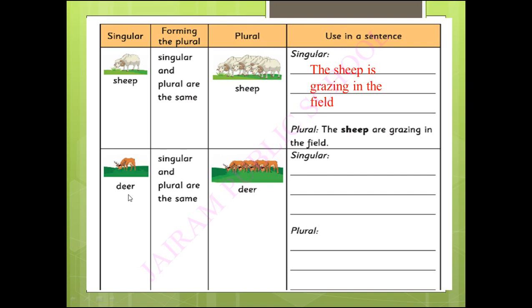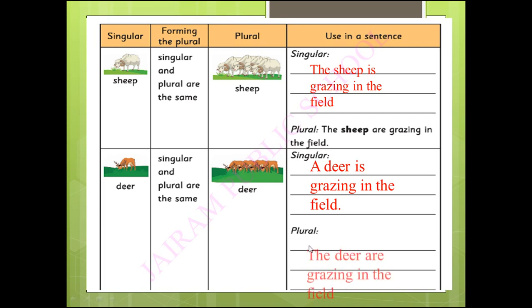Now deer — D-E-E-R. The singular and plural form for deer is the same: deer. For singular: 'A deer is grazing in the field — you can see only one deer.' When it is many: 'The deer are grazing in the field.'